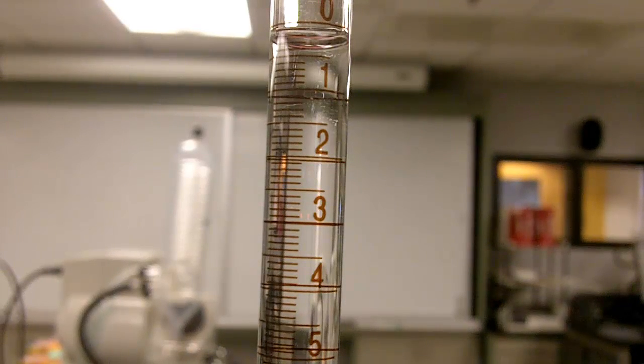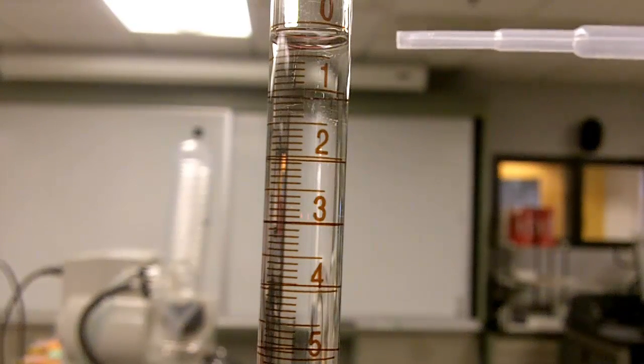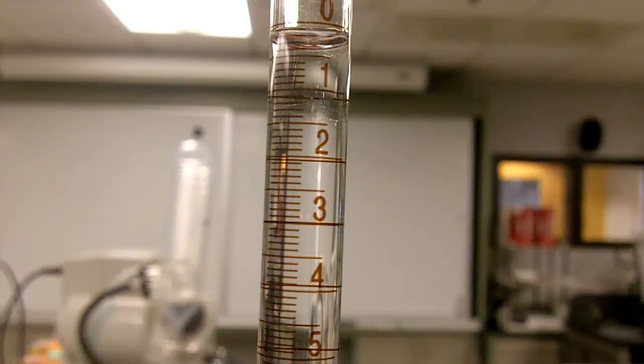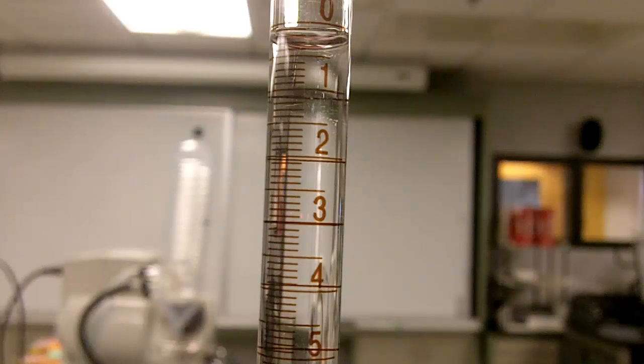Now the thing to remember is that a burette is reverse graduated, which means that the zero is at the top and the numbers get larger as you go down. The reason why it is done that way is so that you can subtract the initial number from your final number to find out how much volume has been dispensed.